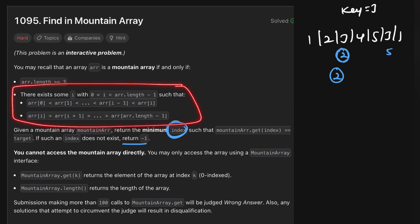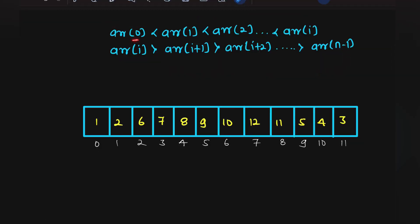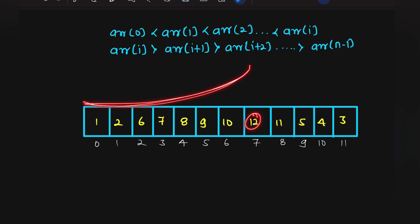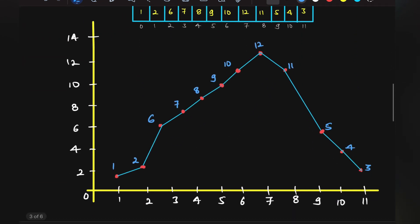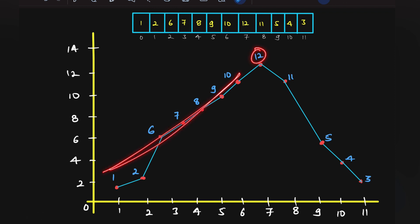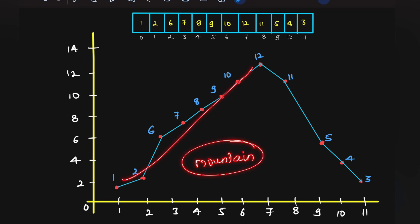The array is strictly increasing from the start until some peak point i, and strictly decreasing from that point onward. If we plot these numbers on a graph, the array looks exactly like a mountain — no duplicate elements within the increasing portion and no duplicates within the decreasing portion individually.